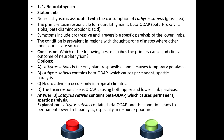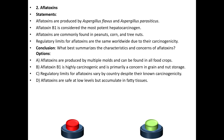Lathyrus sativus contains beta-ODAP and the condition leads to permanent lower limb paralysis, especially in resource-poor areas. Next, second question: Aflatoxins.